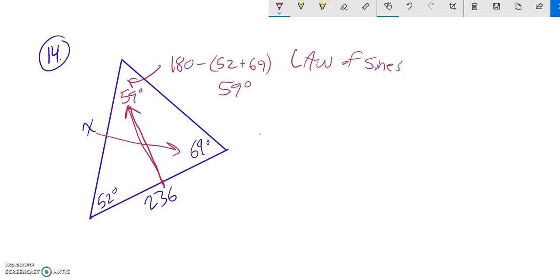So I know that x divided by sine of 69 degrees equals 236 divided by sine of 59 degrees.